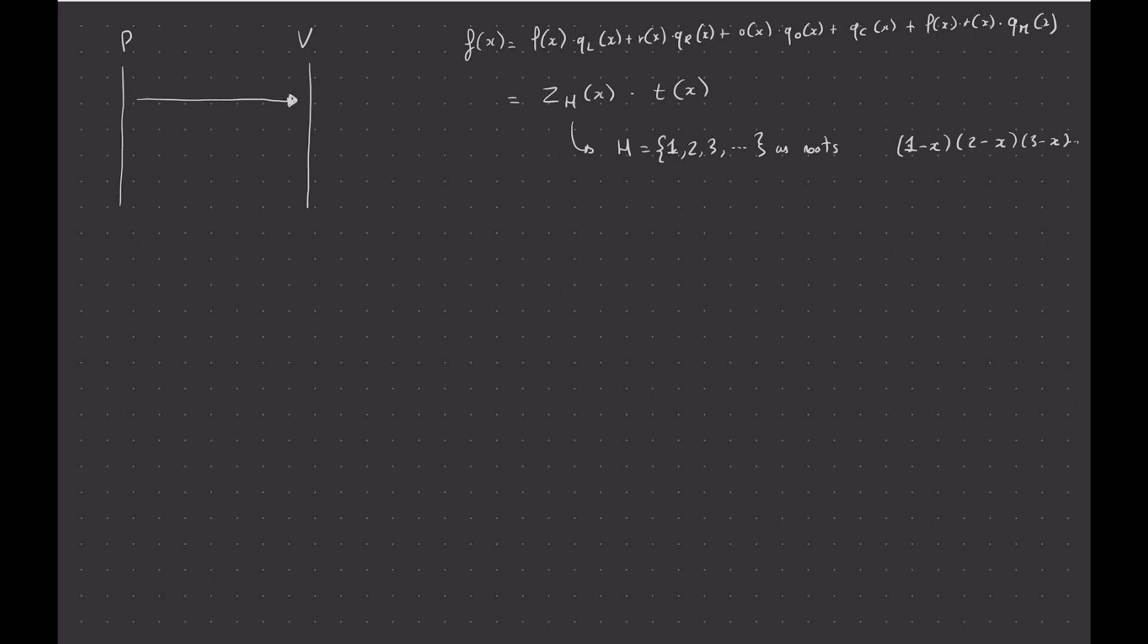Where you always have the prover commit to something, then the verifier send a challenge, and then the prover doing something on that challenge with the commitments. So anyway, here, the prover is going to send the commitment to l, and the commitment to r, and the commitment to o, or the witness polynomials.